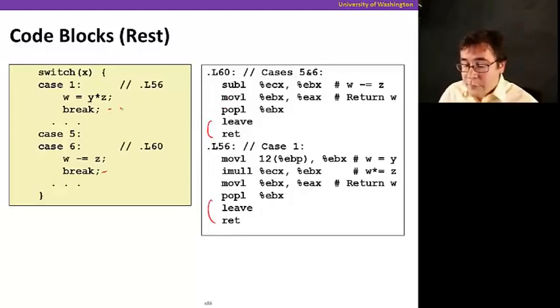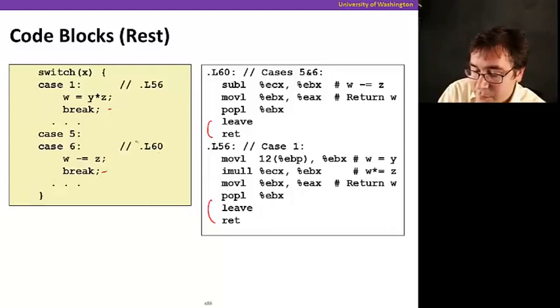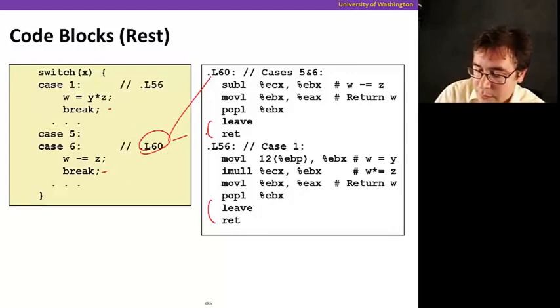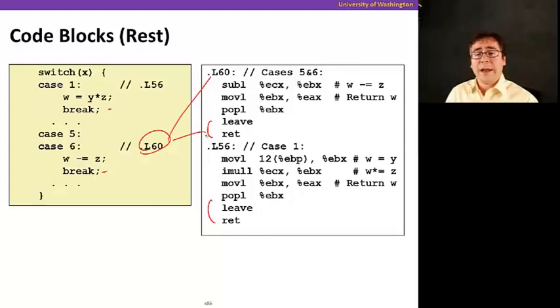Here's the rest of the code block for our example. The important thing to notice is that you have returns after every single block that had breaks. And both case 5 and case 6 are mapped to the same label, .l60.